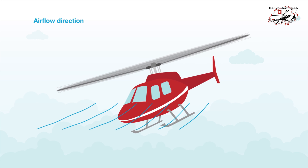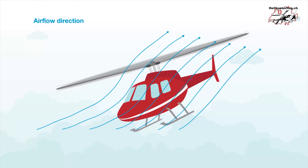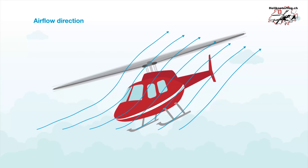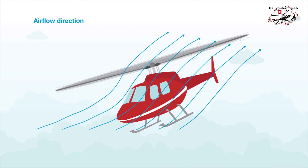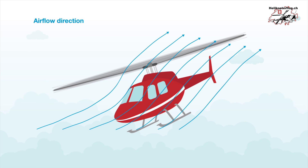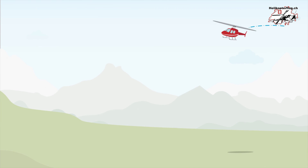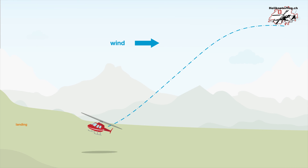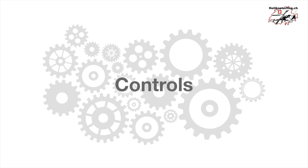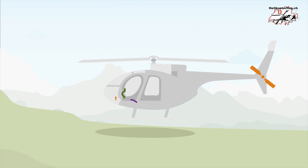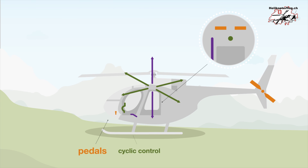What is known as gliding flight for a fixed-wing aircraft is called auto-rotation for a helicopter. If the drive fails during flight, the pilot reduces the collective pitch angle. The result is a wind turbine effect and the rotor speed is maintained. This allows the pilot to make a controlled descent and land the helicopter.